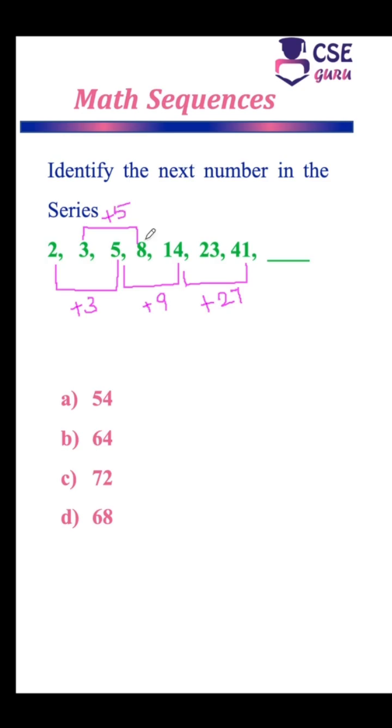term is plus 5, and the difference between fourth and sixth term is plus 15. If you are considering the pattern, this is 3. This difference into 3 will get it as 9. Next, this difference into 3, we will get it as 27. Here into 3 pattern we need to consider.